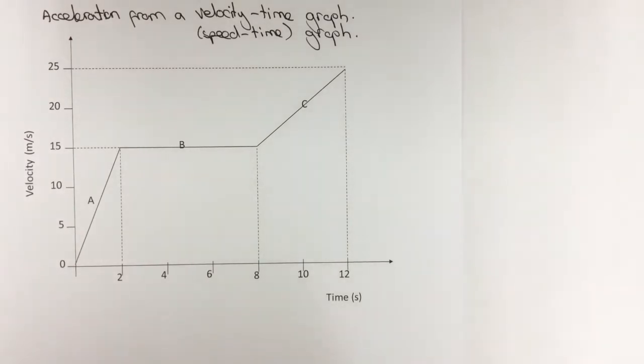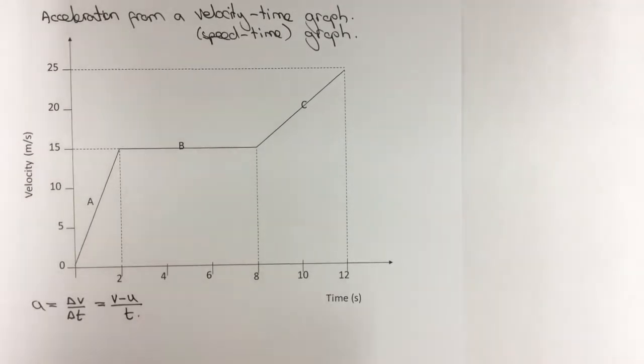So it's worth remembering the equation for acceleration is change in velocity over the time taken, which can be written with delta v over delta t as well. Often people find it a little bit easier thinking of this as the final velocity or final speed minus the starting velocity or starting speed divided by the time taken.